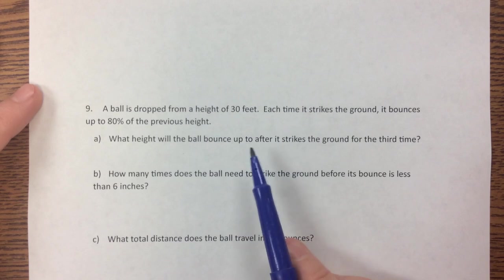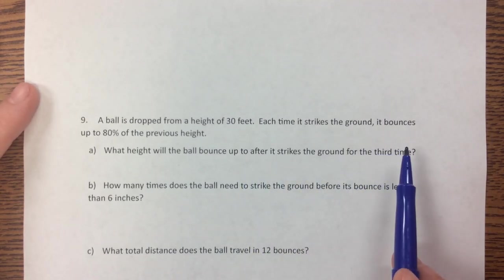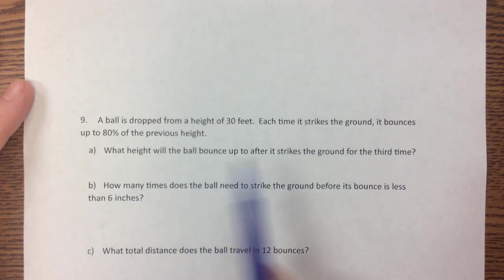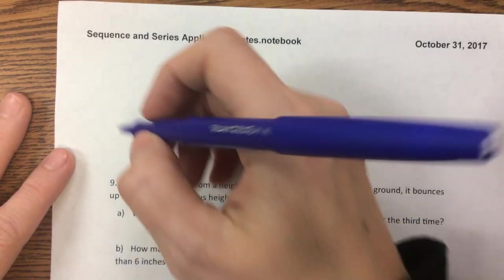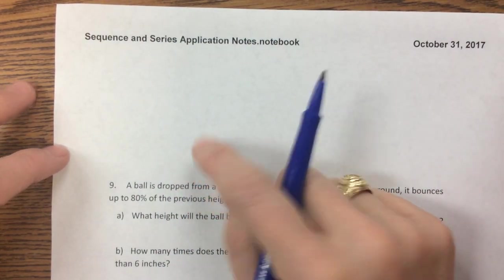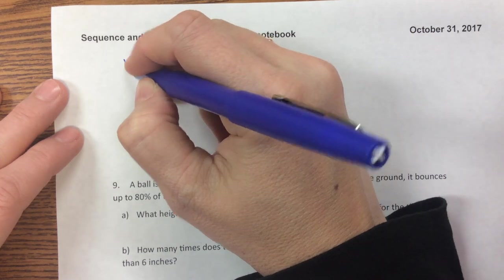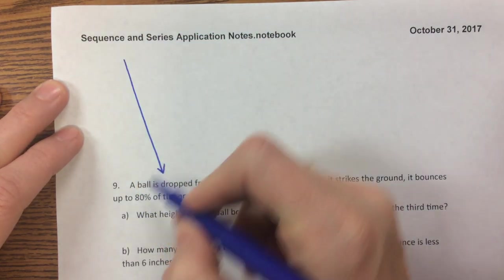They're telling us a ball is dropped from a height of 30 feet and each time it strikes the ground it bounces up to 80% of the previous height. So I'm going to draw a picture and I would advise you to draw a picture every time.